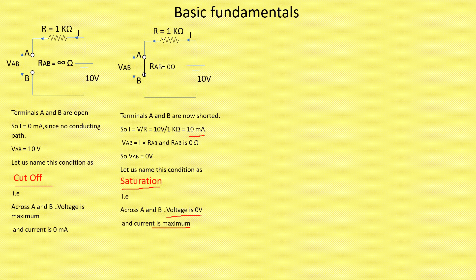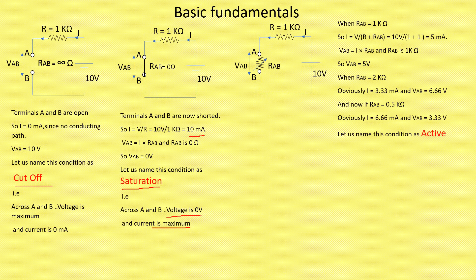Now let us go for the third condition, that is active. In this case, the same circuit is used. Now between A and B, we are going to connect one variable resistance RAB. We can take the value of RAB from zero ohm to infinite ohm — any intermediate value between zero ohm and infinite ohm. For understanding purposes, we are taking only three values. When RAB is equal to 1 kilo ohm, the total resistance of the circuit becomes 2 kilo ohm.